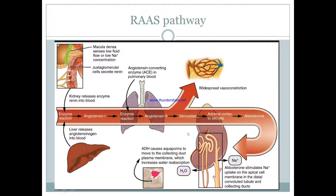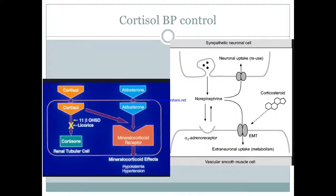How does cortisol increase blood pressure? Cortisol has a unique permissive action — it doesn't directly increase blood pressure, but increases it indirectly. Corticosteroids increase alpha-1 receptors on vascular smooth muscle, allowing increased sensitivity of norepinephrine to act on alpha-1 receptors and cause vasoconstriction, increasing blood pressure. Another way is that excess cortisol can act on the mineralocorticoid receptor for aldosterone, functioning like aldosterone, resulting in hypokalemia and hypertension.